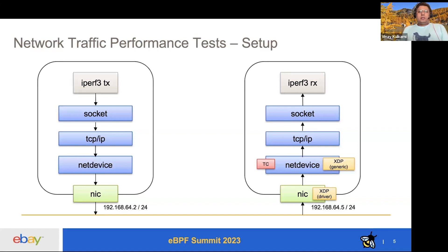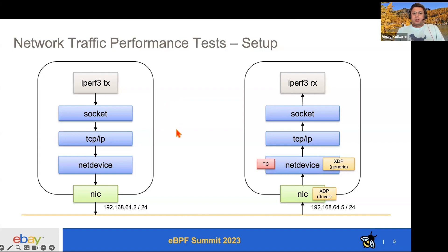Our performance test setup is very simple. It's two VMs running on an M2 Max, which is a pretty powerful system. We have an iPerf 3 sender sending at max rate using a single TCP stream, because we just want apples-to-apples comparison in the same setup. The sender sends traffic down the stack and the target VM on the right receives it via the NIC, traversing up the stack. The programs we attach are dummy programs — they just return OK and let packets through. What we get from this is the overhead of just calling these programs.